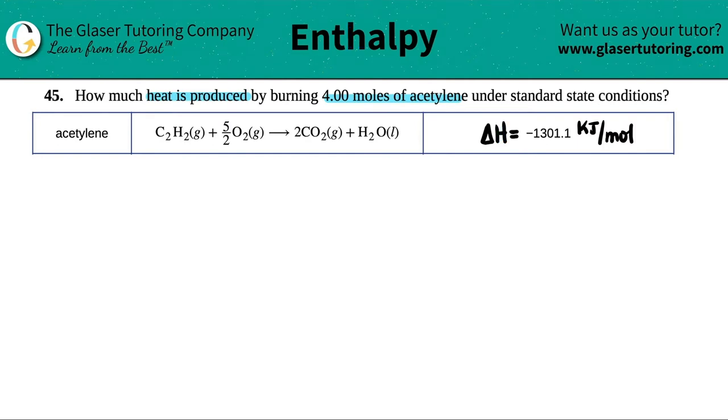Delta H represents how much heat is either lost or gained under one mole of whatever compound you're talking about. So in this case, when one mole of acetylene, C2H2, is burned by oxygen under combustion, there will be 1,301.1 kilojoules that will be released. Now I say released because there's a negative here. This means that it's exothermic.